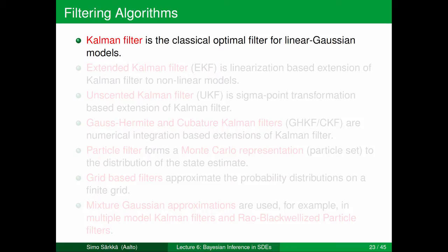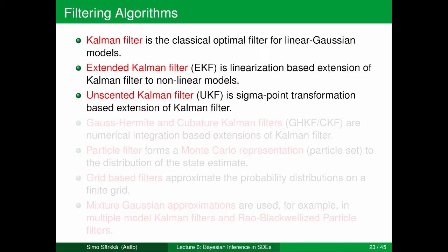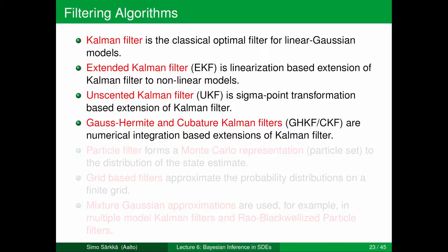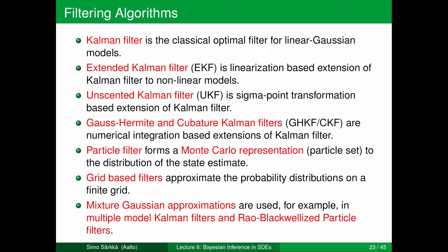What kinds of algorithms do we get? The Kalman filter is the classical optimal filter for linear Gaussian models: if both the dynamics and measurement model are linear Gaussian, the Kalman filter computes the closed-form solution. In the nonlinear case there are no closed-form solutions. The Extended Kalman Filter uses linearization as an extension to nonlinear models. The Unscented Kalman Filter uses sigma-point transformation or numerical integration. Gauss-Hermite and Cubature Kalman filters are based on other numerical integration schemes. Particle filters use Monte Carlo approximations to represent the filtering distribution. Grid-based filters approximate the posterior density on a finite grid, and mixture Gaussian approximations use mixtures of Gaussians to approximate the filtering distributions.